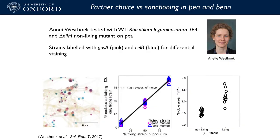Another student, Annette Westhoek, used a similar marking system to ask: do plants select good nitrogen-fixing bacteria? She made a NIFH mutant and showed that plants can't select between fixers and non-fixers — nitrogen fixers still only end up in 50% of nodules. However, she showed that non-fixing nodules are smaller: the plant works out that not much nitrogen is coming out and shuts the nodule down. It's a very clever process and there's some beautiful plant genetics there for someone to work out in the future.